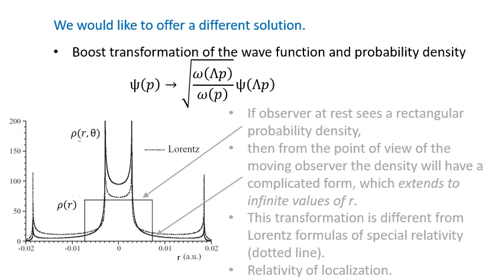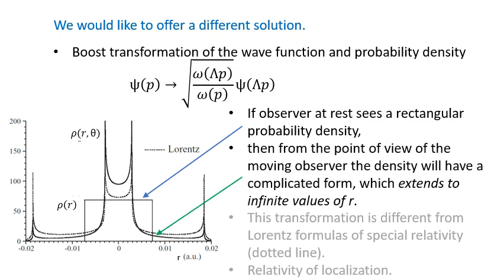To answer this question we have to transform the initial wave packet to the moving frame. This has been done numerically. If the initial wave packet was rectangular, then for the moving observer the probability density acquires a complicated form whose tails extend to infinite values of r. Note that this transformation is different from Lorentz formulas of special relativity whose application is shown by the dotted line.